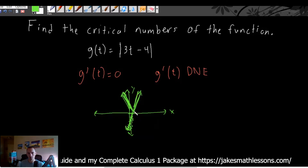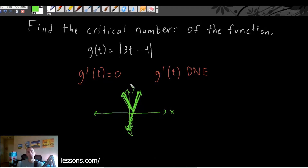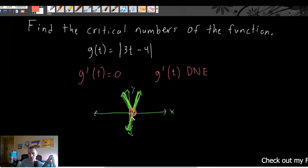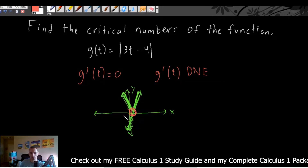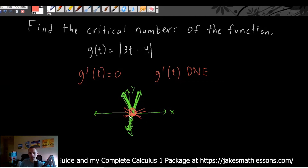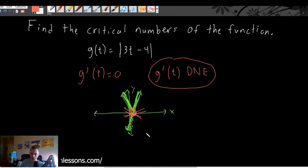To turn that into the absolute value of 3t minus 4, we take the portion that's below the x-axis and mirror it above the x-axis, creating a V-shaped function. Anything above the x-axis remains unchanged; anything with a negative y-value becomes positive. At the sharp corner of this V, something weird happens when taking the derivative — there are infinitely many tangent lines with different slopes at that point, so the derivative does not exist there. That sharp corner is a place we want to consider as a critical number.